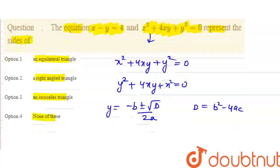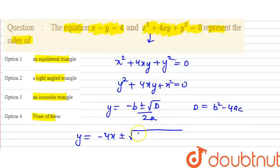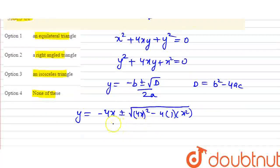So here, treating this as a quadratic in y: a equals 1, b equals 4x, and c equals x squared. So y equals minus 4x plus or minus root of D, divided by 2a, where a equals 1.